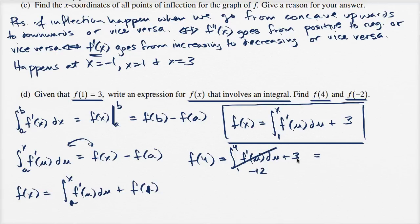So negative 12 plus three is negative nine. Alright, now let's evaluate f of negative two. f of negative two is equal to the integral from one to negative two of f prime of u du plus three.